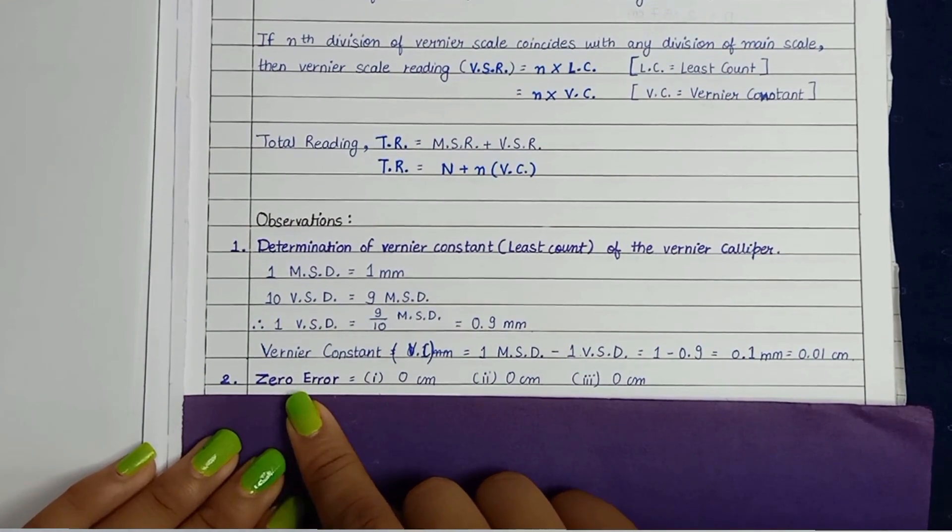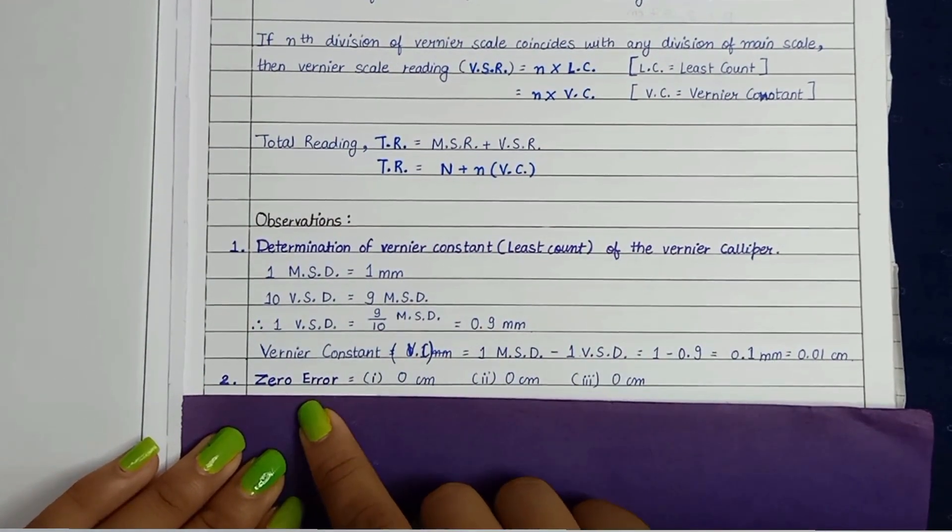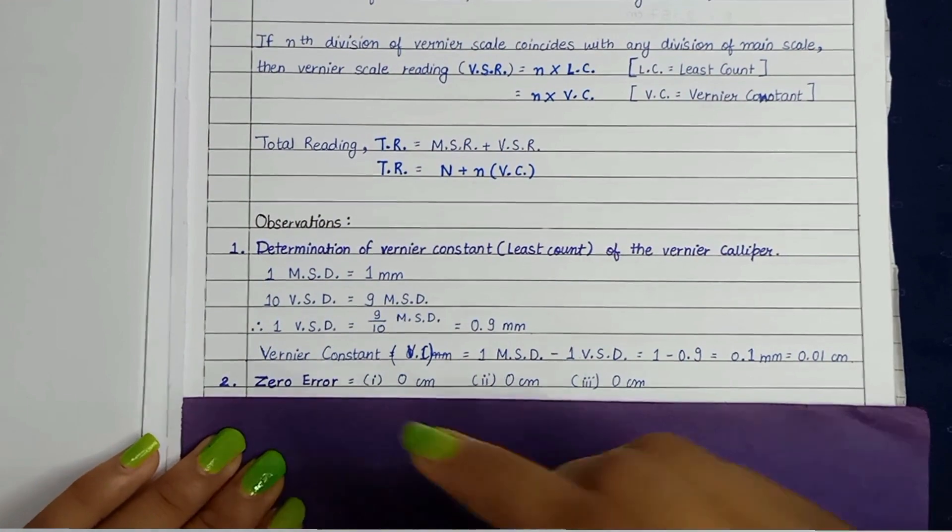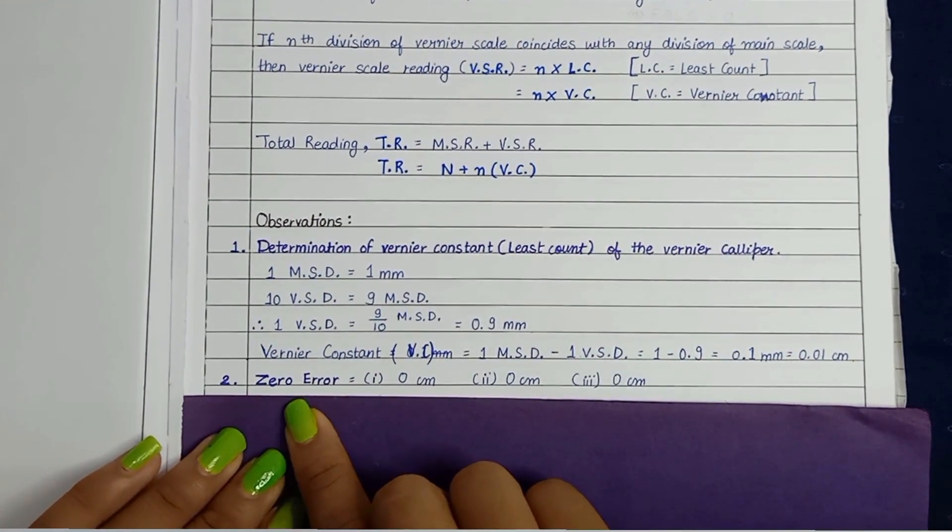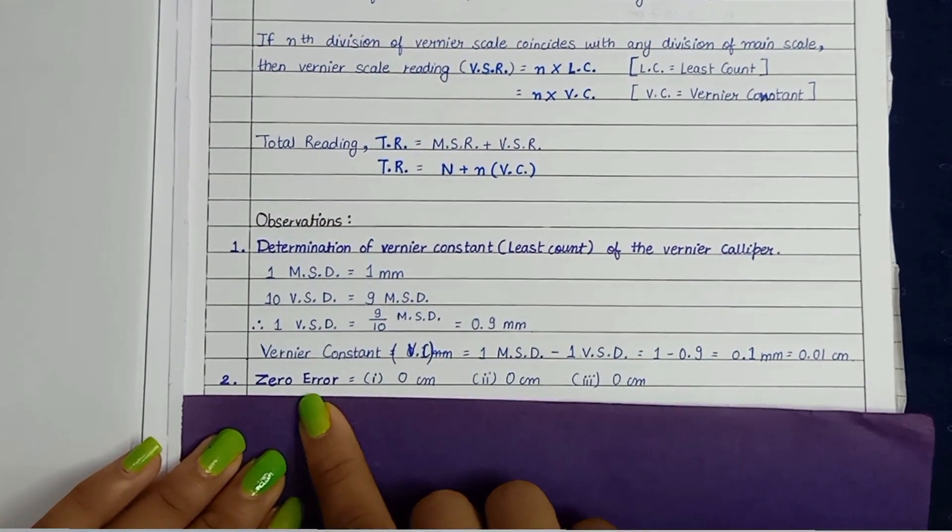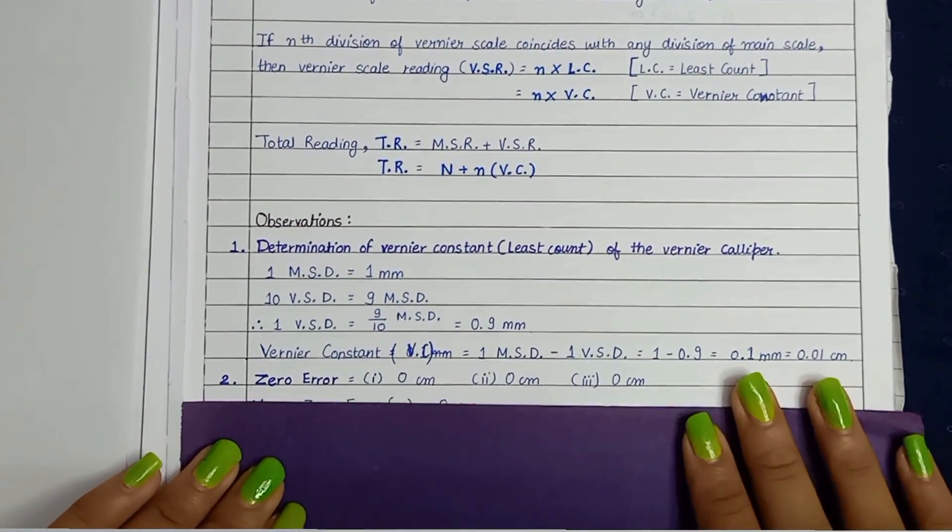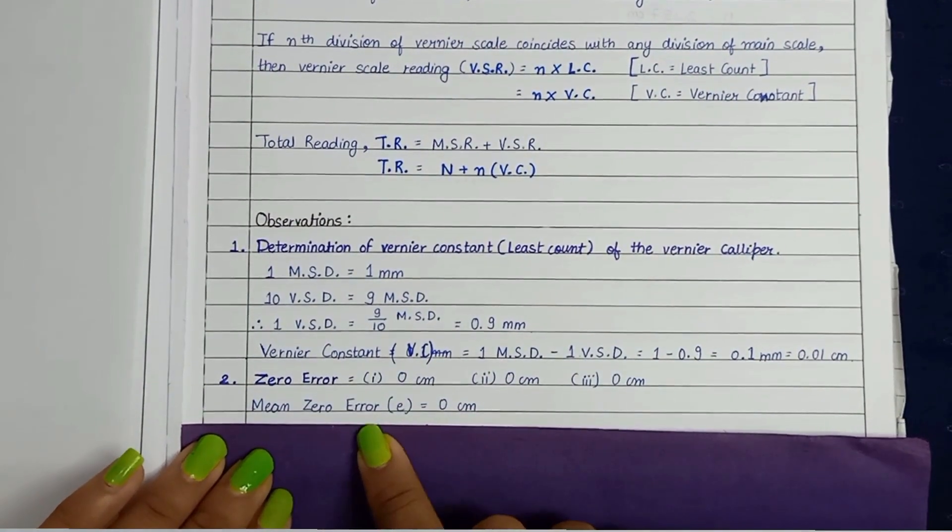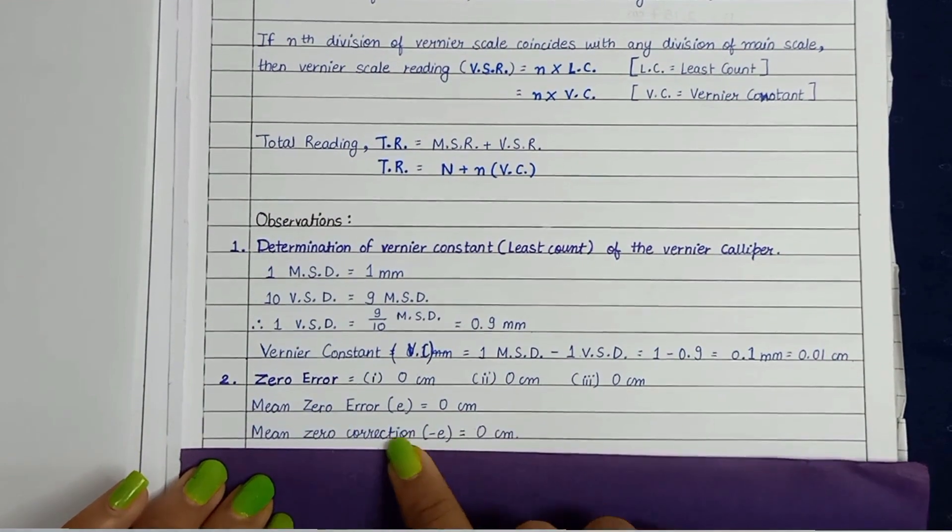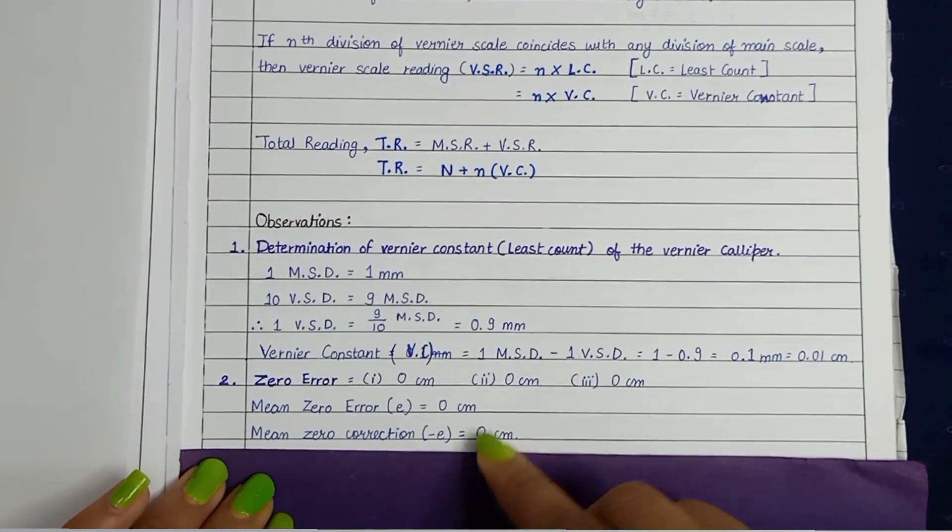Second, if there is any error in the instrument, in vernier calipers, then we have to also determine that. In my observation, there is no error. I have measured three times for the zero error in case if I found it. But since I have not found it, my result is 0 cm in all. So the mean zero error is 0 cm, mean zero correction is 0 cm.